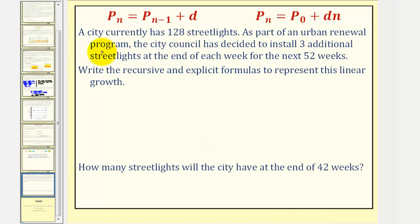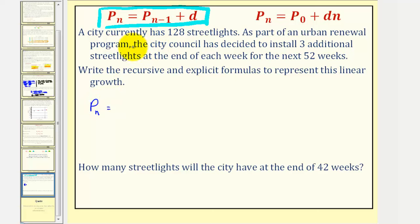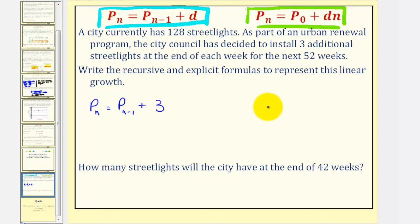Let's take a look at one more example. A city currently has 128 streetlights. As part of an urban renewal program, the city council has decided to install three additional streetlights at the end of each week for the next fifty-two weeks. Write the recursive and explicit formulas to represent this linear growth. For the recursive formula, P sub n — the number of streetlights after n weeks — would be equal to P sub n minus one plus D, where D is three because they're adding three additional streetlights at the end of each week. For the explicit equation, P sub n equals P sub zero plus D times n, which gives us 128 plus 3n.